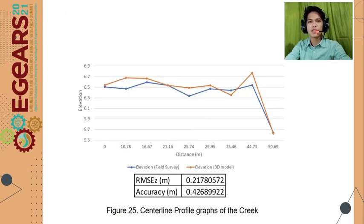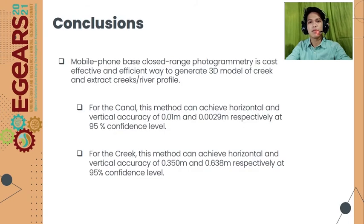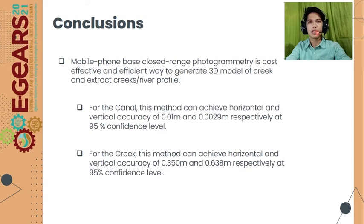For the conclusion, the approach of mobile phone-based close-range photogrammetry is cost-effective and efficient for generating 3D models of creeks and extracting cross-section profiles. The canal achieved a horizontal and vertical accuracy of 0.01 meter and 0.0029 meters respectively at 95% confidence level. For the creek, this method achieved a horizontal and vertical accuracy of 0.350 meter and 0.639 meters respectively at 95% confidence level.